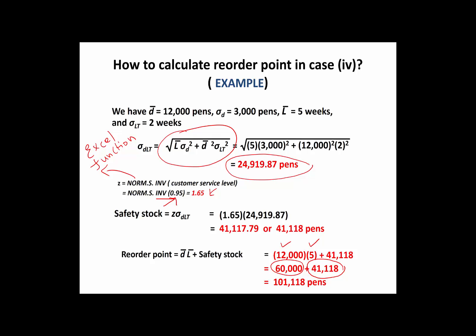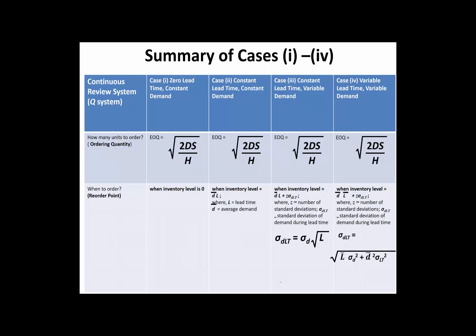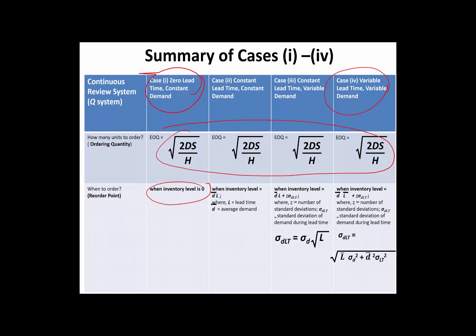Let's look at the summary of all cases. On one end, you have an ideal situation with zero lead time and constant demand; on the other end, you have the most realistic situation with variable demand and variable lead time. The ordering quantity remains the same from case to case; however, the reorder point changes. In the ideal situation the reorder point is zero, while in the realistic situation it is at its highest. As we move toward the more realistic situation, the reorder point increases, and we must carry more inventory to address uncertainty in demand and lead time.